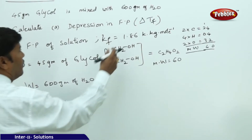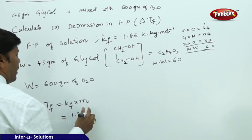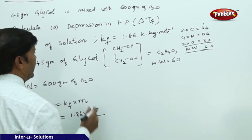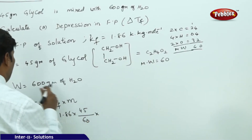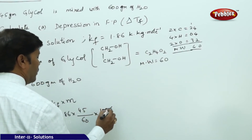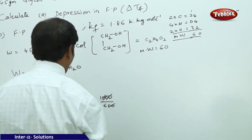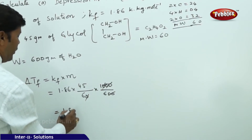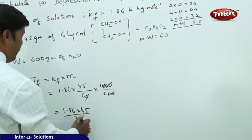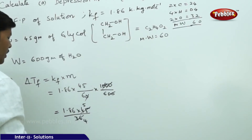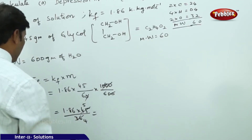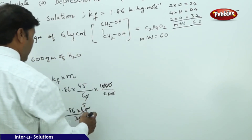ΔTf = Kf × molality, with Kf = 1.86 Kelvin kg per mole. Expanding: ΔTf = 1.86 × (45 / 60) × (1000 / 600). The 1000/600 simplifies — cancelling zeros gives 10/6. So ΔTf = 1.86 × (45 / 36) = 1.86 × 5/4.